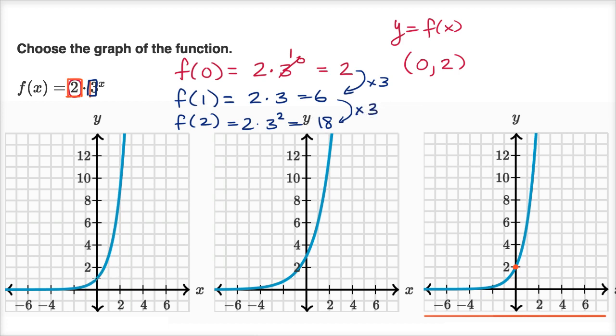This one, we said it has the wrong y-intercept, but as we go from x equals zero to x equals one, we are going from one to three. And then we are going from three till, looks like we're pretty close to nine. So it does look like this does have a common ratio of three, it just has a different y-intercept than the function we care about.